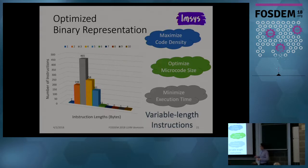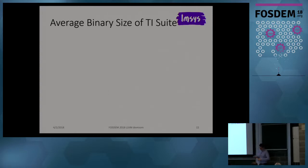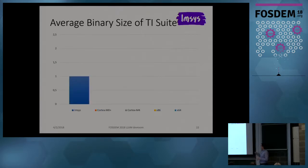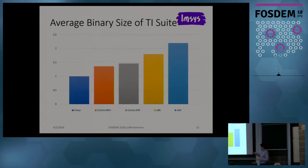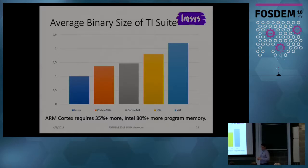We have some preliminary results with ISA-L about code density — this diagram shows binary size, where smaller is better. We compiled the Texas Instruments Suite benchmarks with LLVM and normalized results to our ISA-L. ARM Cortex requires at least 35% more program memory, and x86 requires 80% more program memory to store the same benchmark applications. So our target of having very dense code representation appears to have been reached.